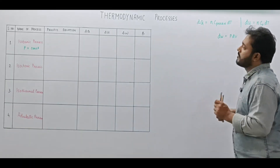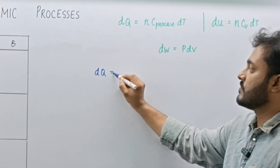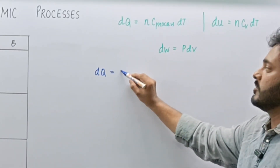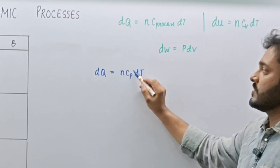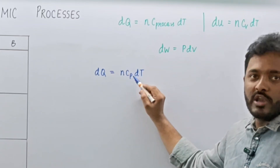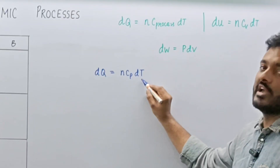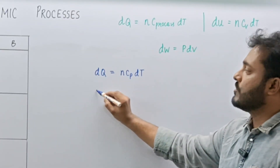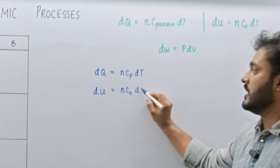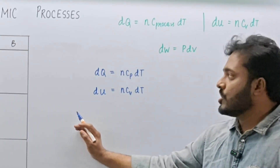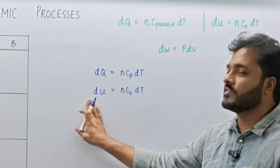Since the process is isobaric in nature, we can say that DQ, written as N C-process DT, will be written as N CP DT — using molar specific heat capacity at constant pressure for N moles of a gas undergoing a DT change in temperature. For DU, we have DU equal to N CV DT, and this formula for internal energy change is N CV DT irrespective of the nature of the process.